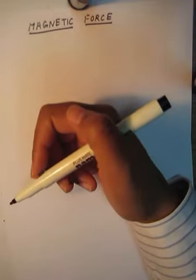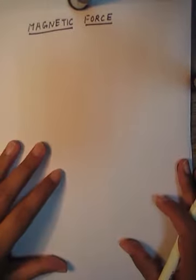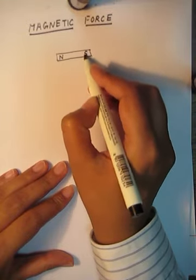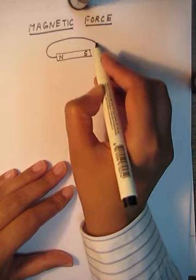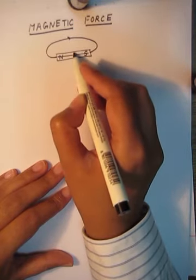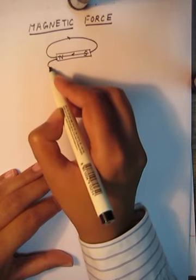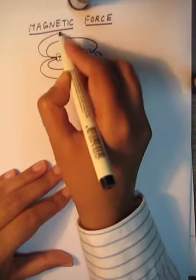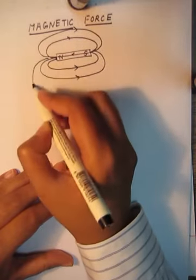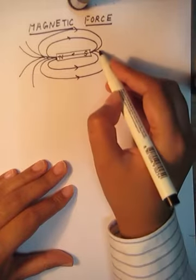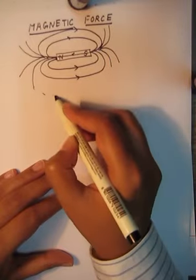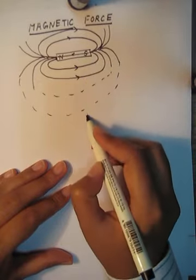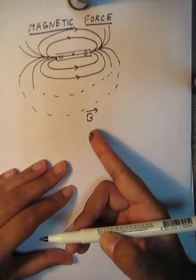Now let's come to the mathematical part of magnetic field and magnetic forces. Up to now we have studied that if there is a magnet it will have two poles, north and south, and the magnetic field will be from north pole to south pole, and inside the magnet it will be from south to north. You also have some magnetic field lines in all three directions. This field around a magnet is called magnetic field and it is given by the symbol B vector.